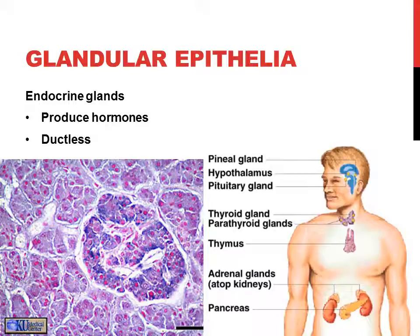Glands are either single-cell or multicellular and secrete a product. Endocrine glands are ductless and produce hormones — they can be unicellular or multicellular. Endocrine glands release all types of hormones and lipid-based compounds that regulate our growth, metabolism, fight-or-flight response, sleep, breathing — all different things that maintain homeostasis. We'll cover this in detail when we get to the endocrine system.